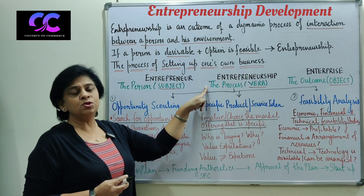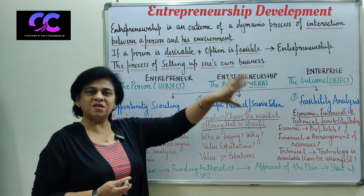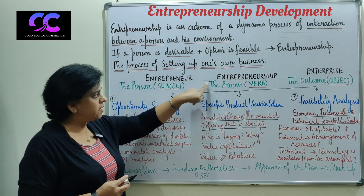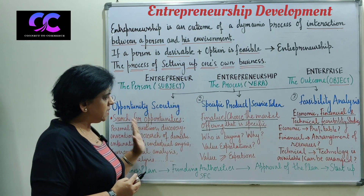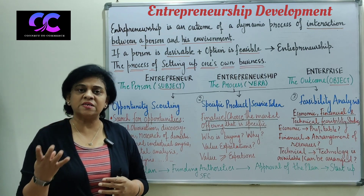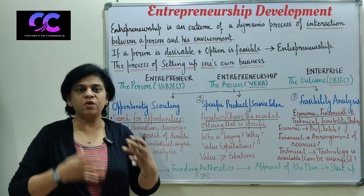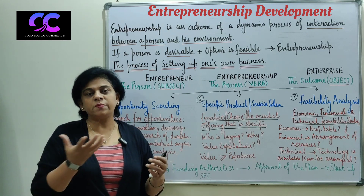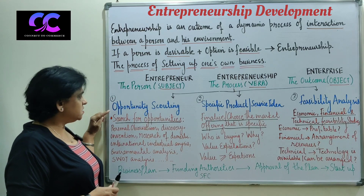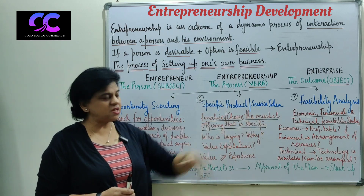The process he undertakes to convert the idea into action is called entrepreneurship, and the outcome of that process — the business that is built and ready — is called the enterprise, which is the object. From these three parts, we only need to focus on the middle part: the process of entrepreneurship. In this process, three simple steps are involved. Just as company formation has stages — promotion, incorporation, capital subscription, and commencement — similarly, the starting phase of entrepreneurship development involves three basic steps: opportunity scouting, specific product and service idea selection, and feasibility analysis.